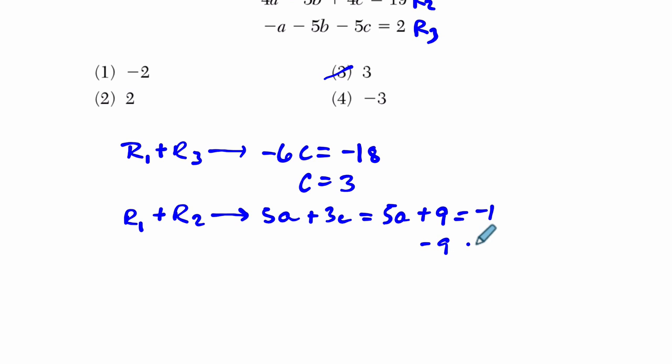So you can subtract 9, and 5a is negative 10 divided by 5, and a is negative 2. That's also a solution to our system.